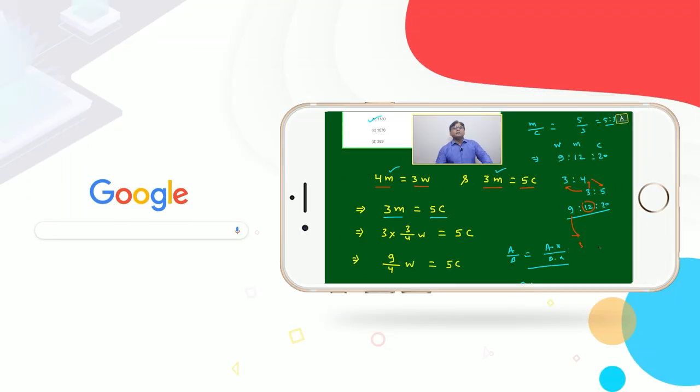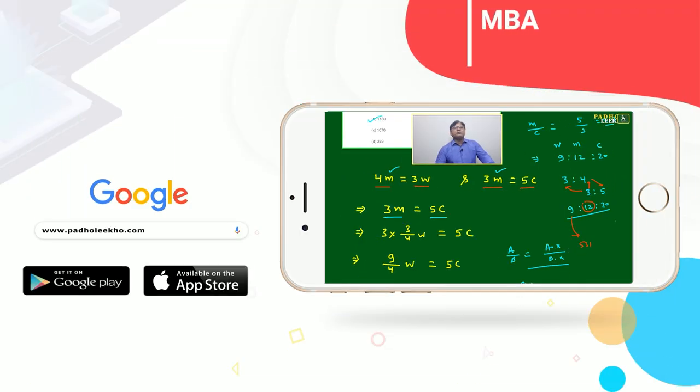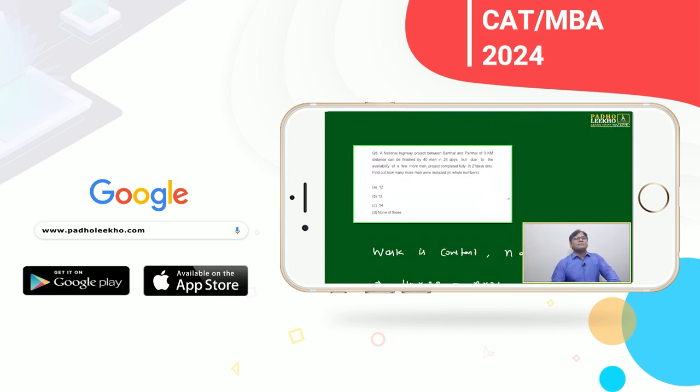If 9 ratio 12 ratio 20, then 9 will change to 531, then 20 will change to 1180 the same way. My concept is the same, just the expression is different.